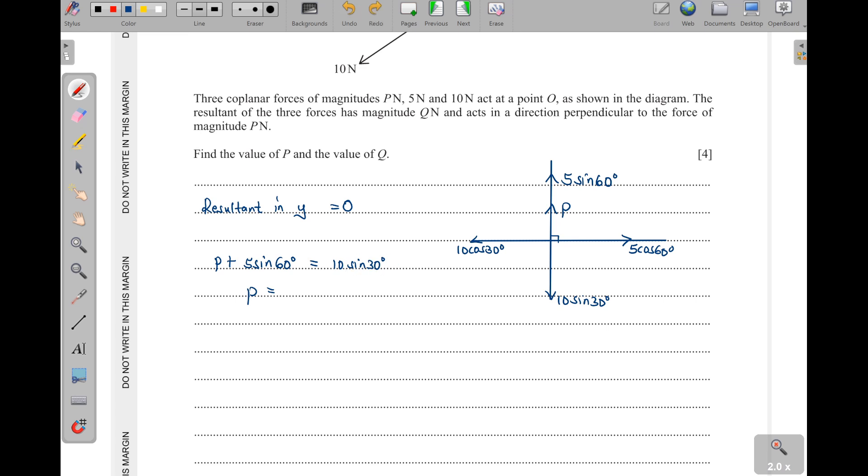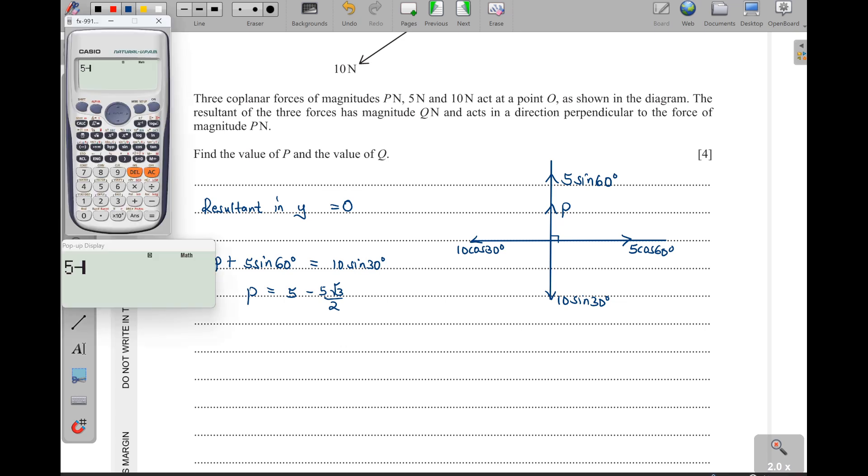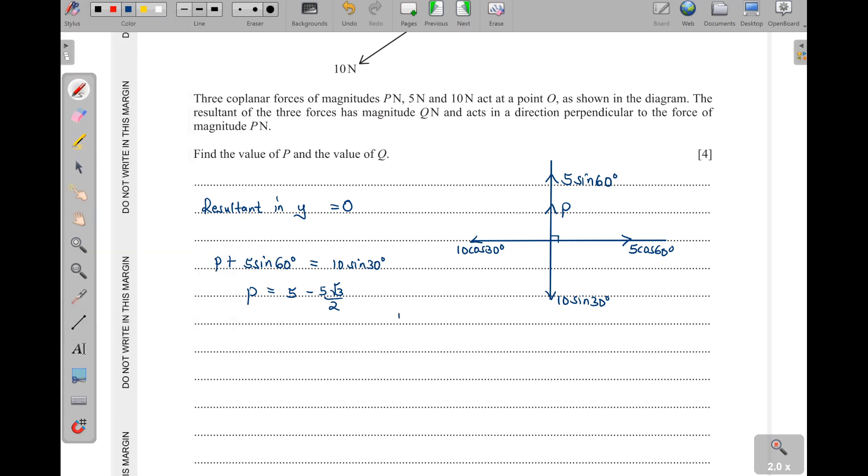So meaning P is going to be equal to 10 sine 30. Sine of 30 is a half, so a half times 10, that will be 5. Then we shall have a minus here because when this one crosses it will be minus, and then sine of 60 is root 3 over 2, so it will be minus 5 root 3 over 2. I can leave it there or I can put it to three significant figures. Let's check: 5 minus 5 root of 3, then over 2, that one will give us 0.6698, but to three significant figures we shall have 0.670. So our P is going to be 0.670 to three significant figures.